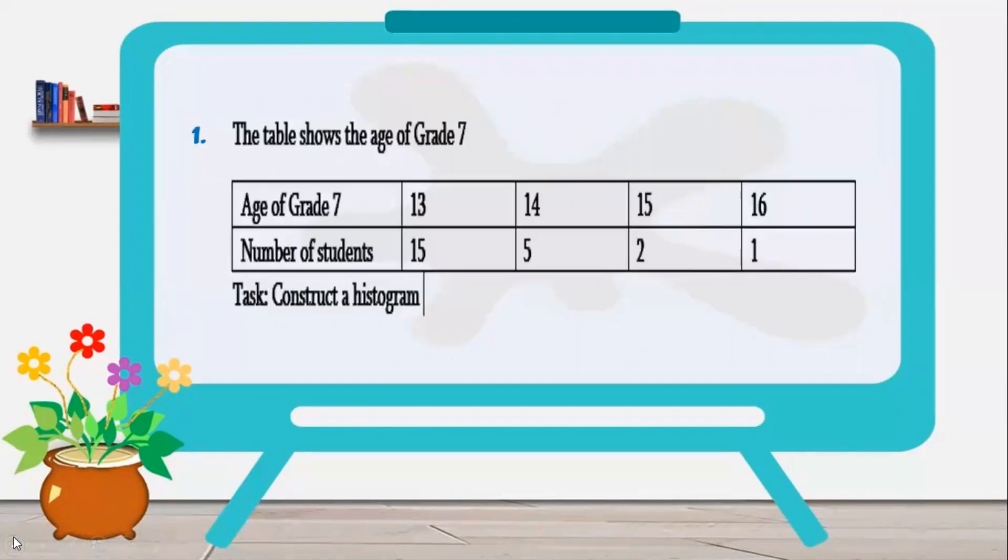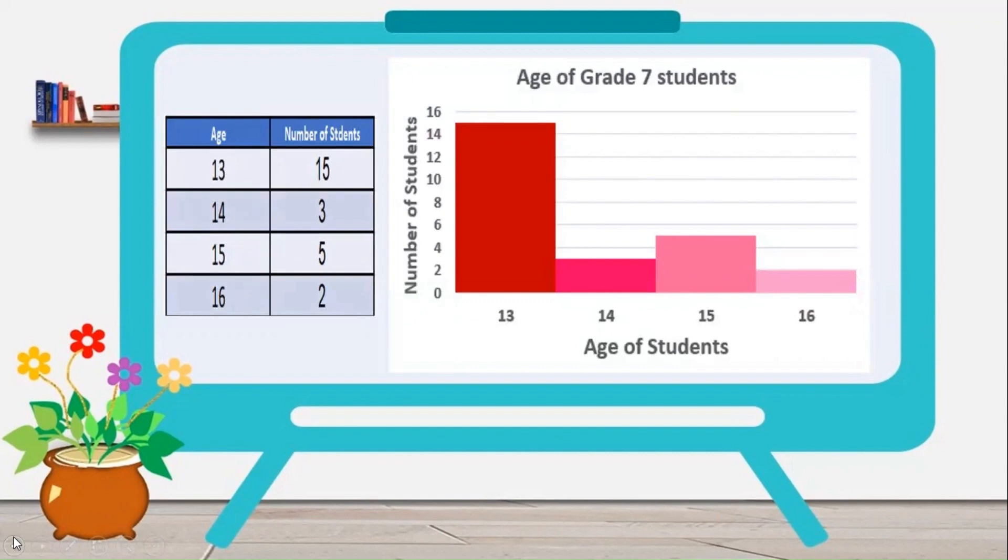It's time for an activity. Number 1. The table shows the age of grade 7 students. Our task here is to construct a histogram out of this given data. Reflected in our histogram are the number of students in the y-axis and the age of students in the x-axis. Remember that histograms are made of bars, the same as bar graph, but it has no space in between the bars. As we can see, the bars are continuous. As we compare the data, most of the students age 13 and there are only 2 students who age 16.